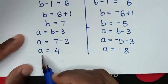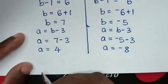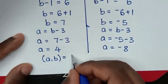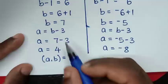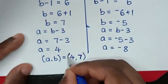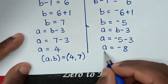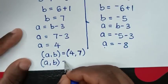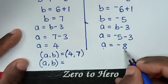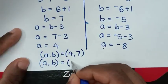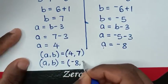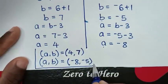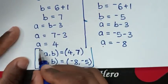Therefore, from the first solution, A comma B is equal to 4 comma 7. And from the second solution, A comma B is equal to negative 8 comma negative 5. These are the two solutions to this problem.